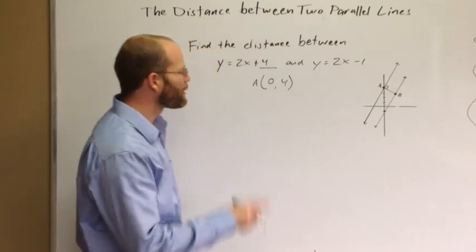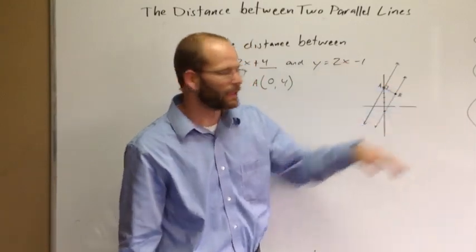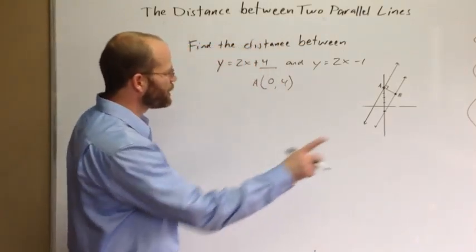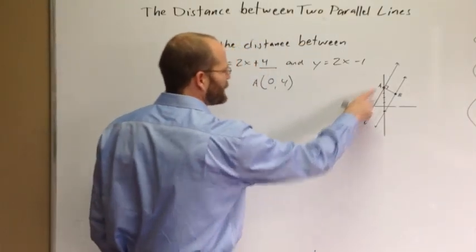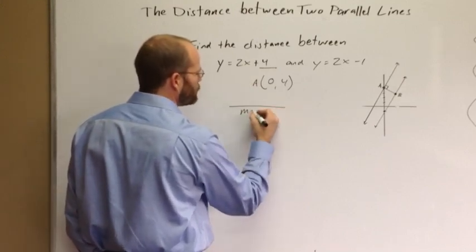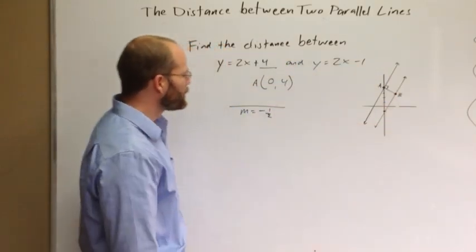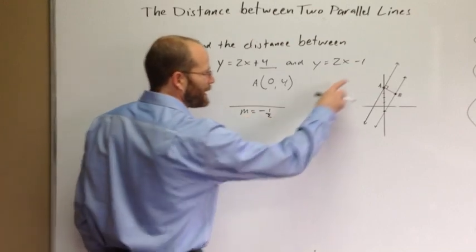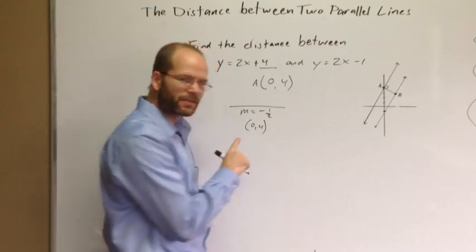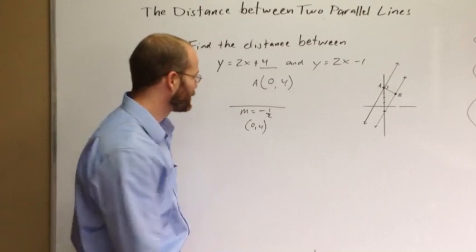I've chosen point A as the y-intercept of one of the equations — I didn't have to do that, I could have chosen any of the infinite number of perpendicular segments between the two lines and any of them would work. But this is a little easier because one point I already know: that is the point (0, 4), which is point A. That makes it faster to find point B. I need to find the equation of line AB — the perpendicular segment — so it must have a perpendicular slope of negative one-half.